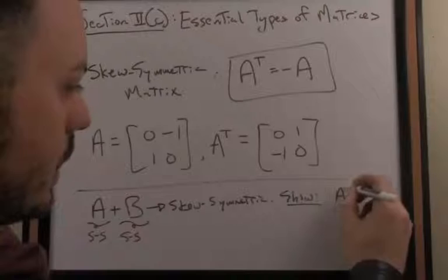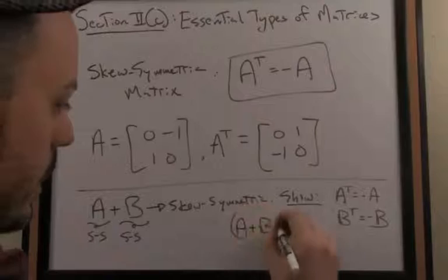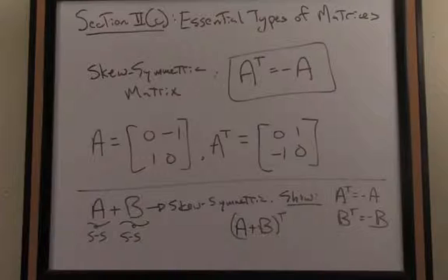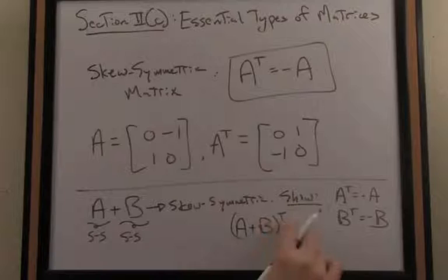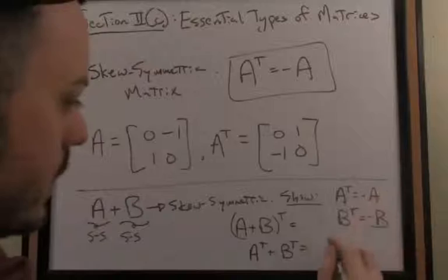We're assuming that A is skew-symmetric, thus by definition A transpose is negative A, and B transpose is negative B. A plus B, how do I test whether it's skew-symmetric? I take the transpose of that new matrix. By properties of the transpose, the transpose distributes linearly across a sum. So A plus B transpose is equal to A transpose plus B transpose.